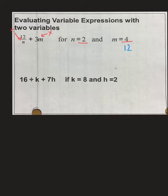So, first step is to substitute into our expression. So, 12 over, instead of n, we put in our 2, plus 3 times m, which we put in our 4. And remember, parentheses represents multiplication.